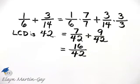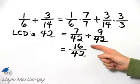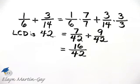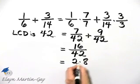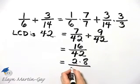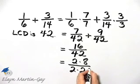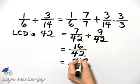Can this be simplified? Well the answer is yes because I know 16 and 42 have a common factor of 2. So I can write 16 as 2 times 8 and 42 as 2 times 21 and then you see these